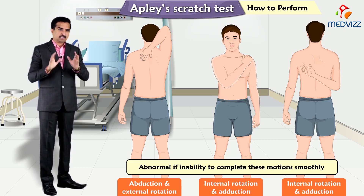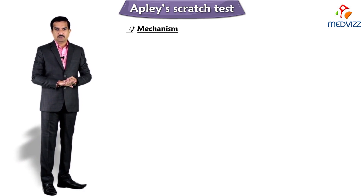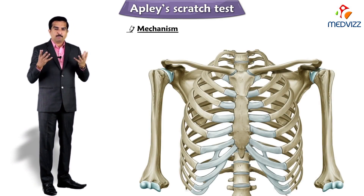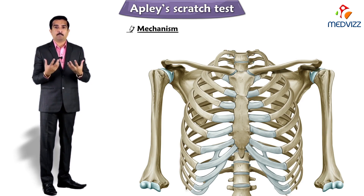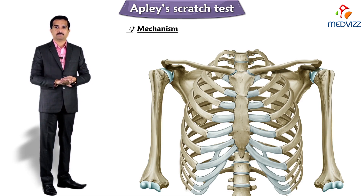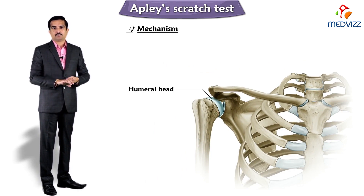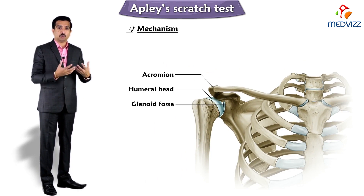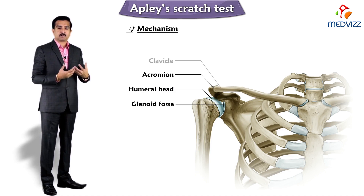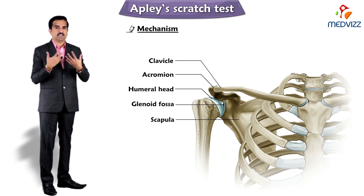Now let us understand the mechanism behind this test. The shoulder joint is a complex structure whose components include the humeral head, glenoid fossa, acromion, clavicle, scapula, and surrounding soft tissue structures and various ligaments.